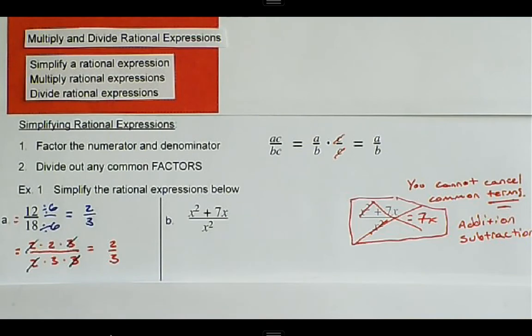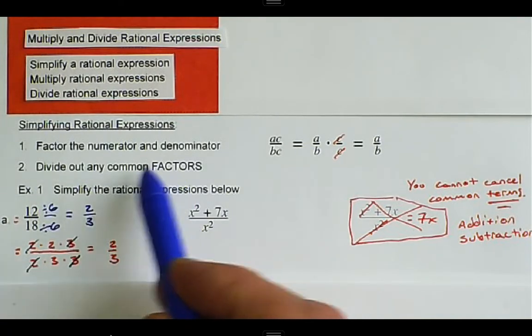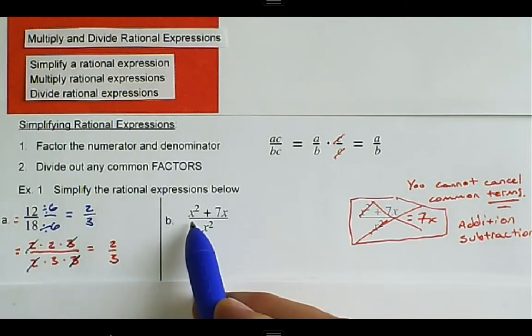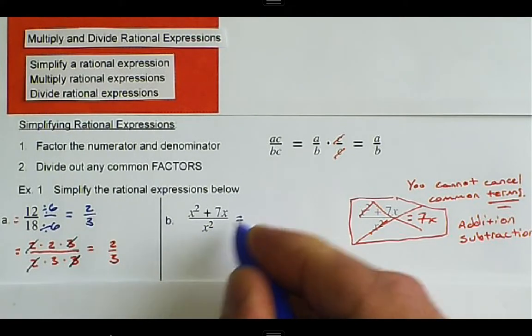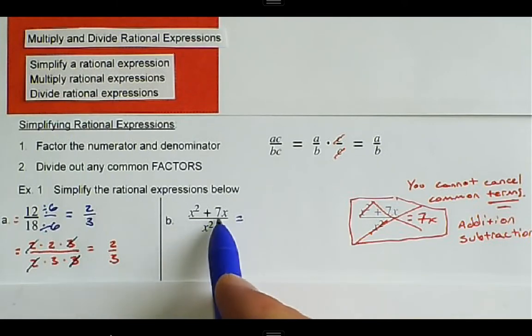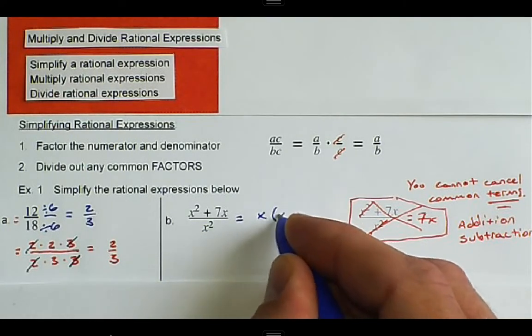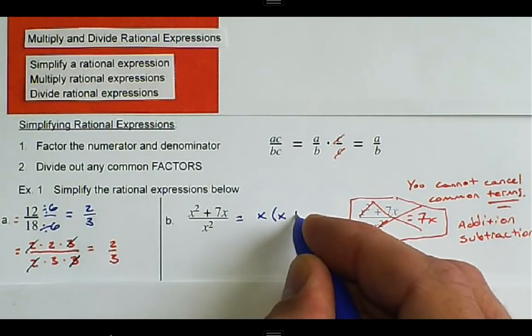So, going back, we have here the first step, factor the numerator. Here, we can rewrite this as both terms have an x in them, so we can factor an x out. So, we have x times x plus 7.